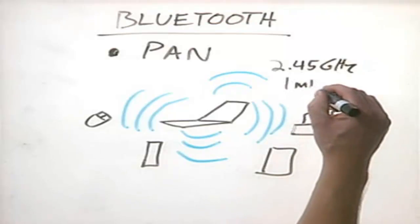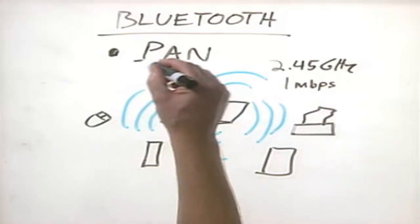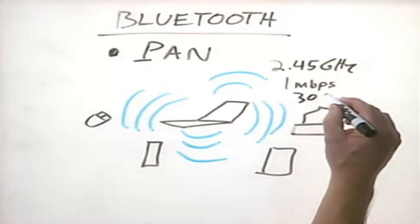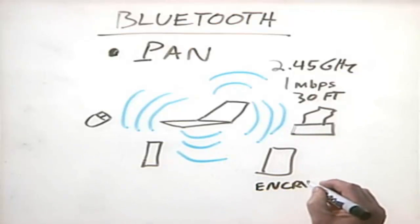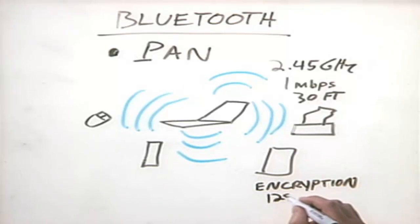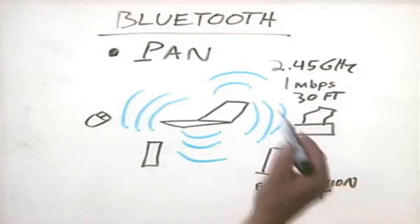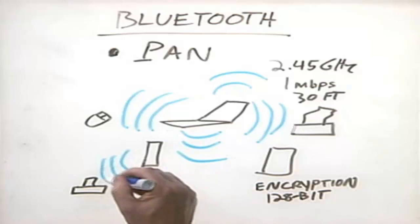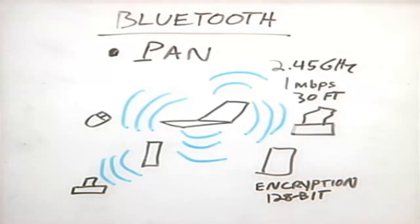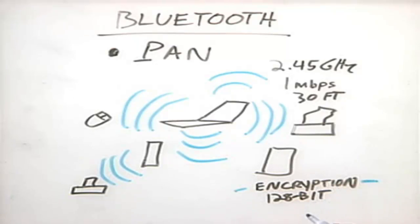Bluetooth transfers data at one megabit per second and has a very short range — that's why we call it a personal area network. It's only about 30 feet; beyond that you can no longer communicate. One great advantage of Bluetooth over infrared is that it uses encryption — specifically 128-bit encryption. Although someone nearby with a Bluetooth adapter could theoretically capture data being broadcast, the contents are scrambled. Without the encryption key, the captured data is unreadable — just gibberish.